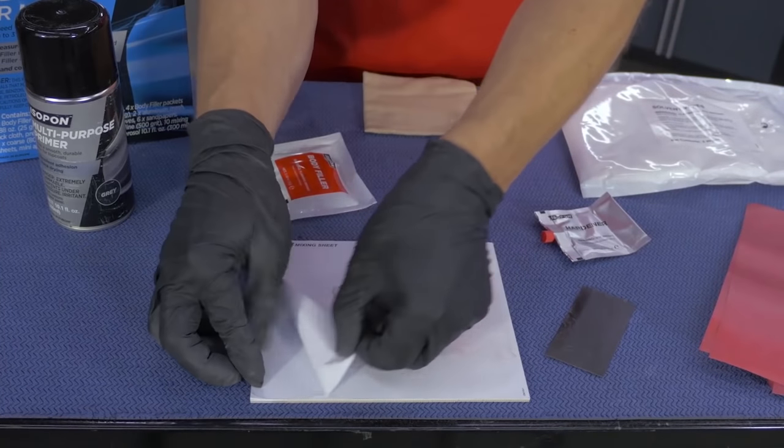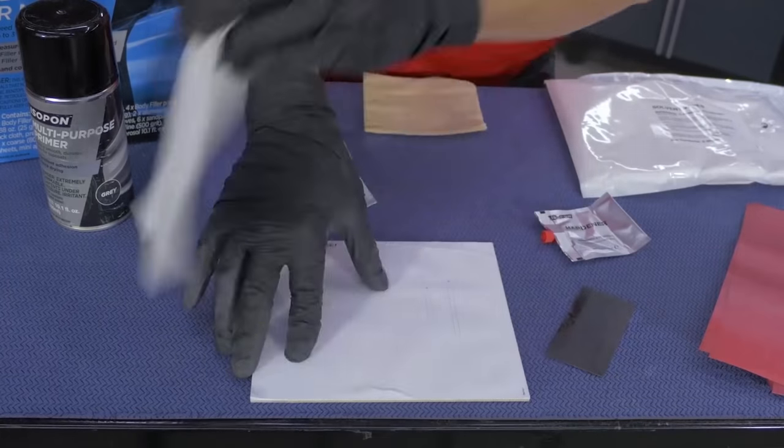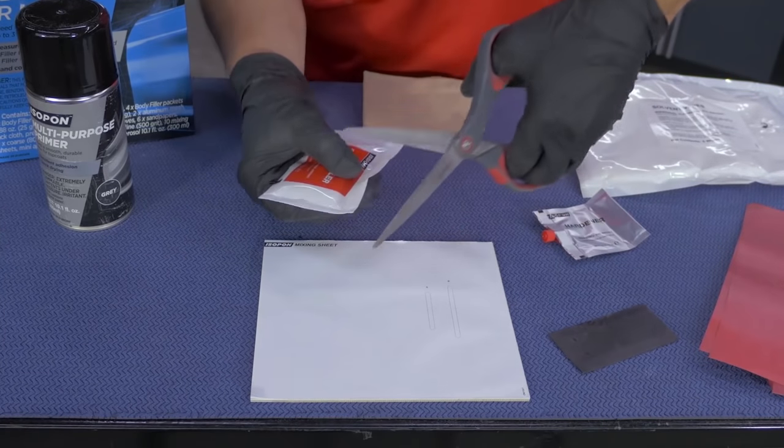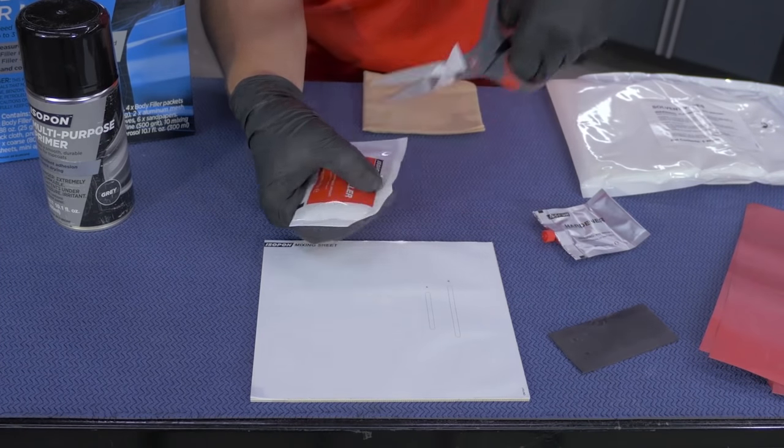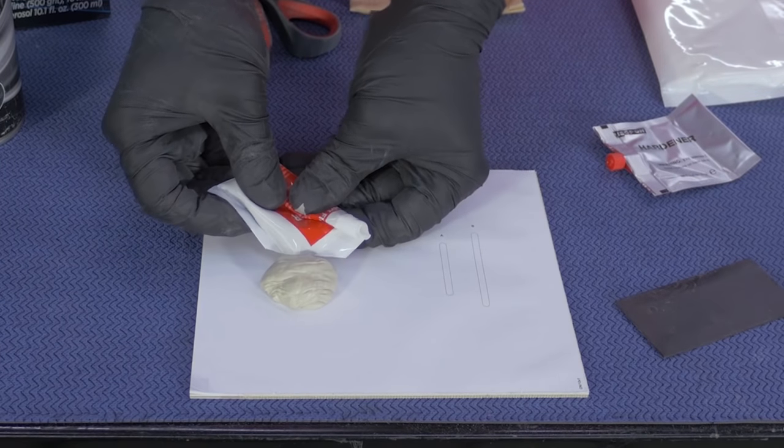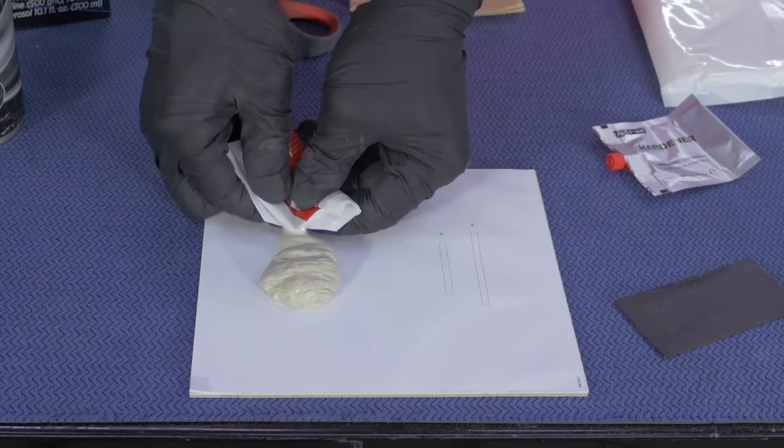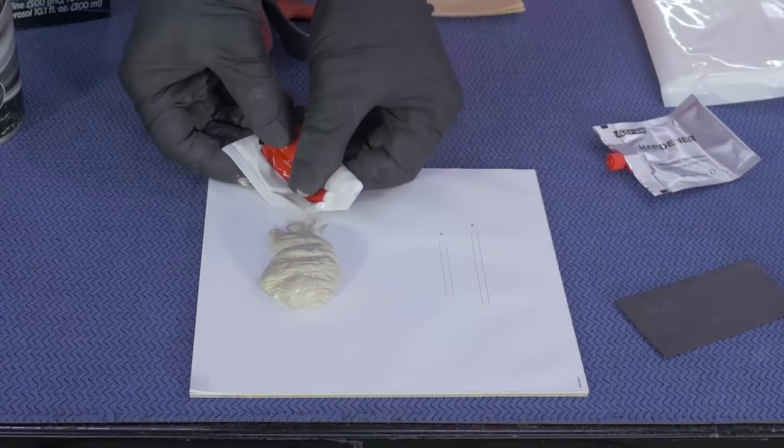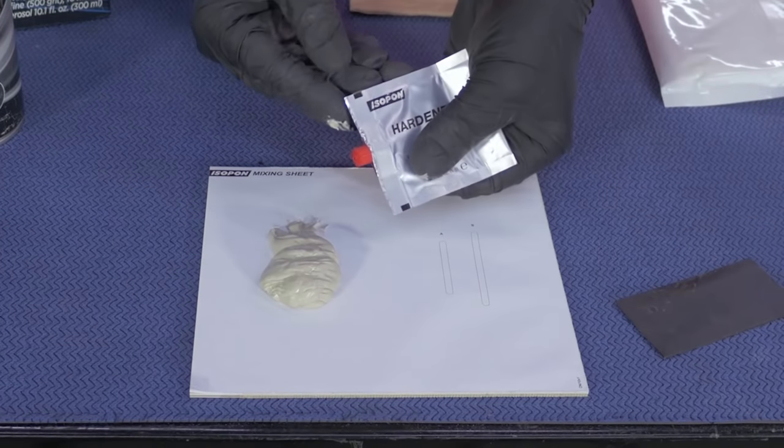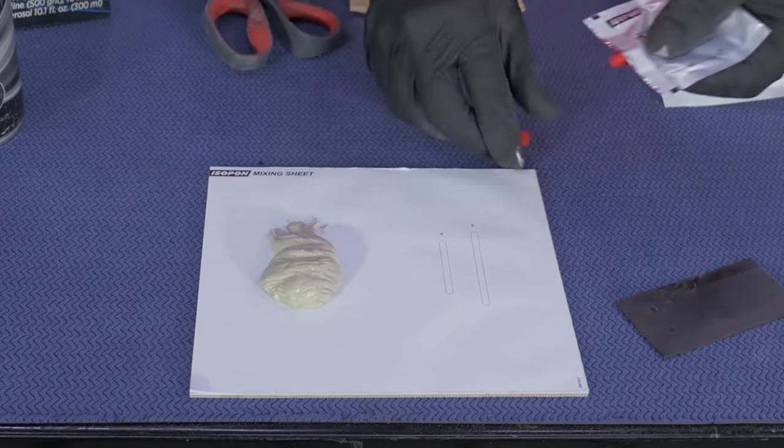The peel away sheets give you a fresh, clean surface for the next stage, which is squeezing out the body filler, followed by the hardener squeezed out to the A length.